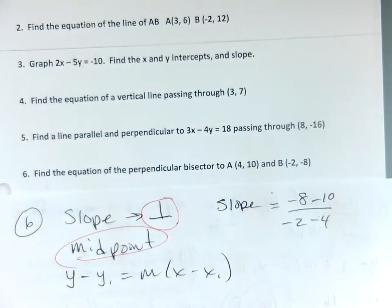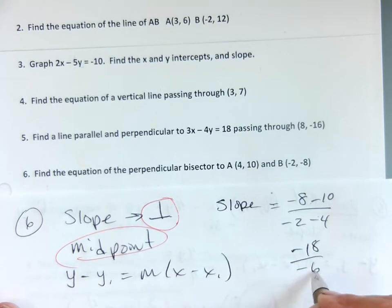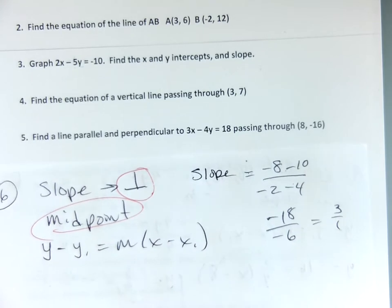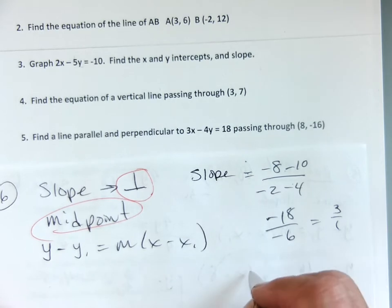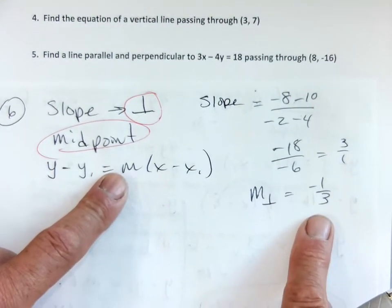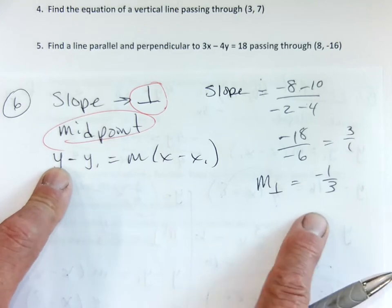So, I'm going to get a negative 18 over negative 6, which is positive 3 over 1, okay? But I don't want that slope, right? Lauren, I'm not going to make this mistake again. So, again, what I really need is a negative one-third. And we'll use that in this formula, okay? So, I changed the perpendicular slope. Now, I need the midpoint.